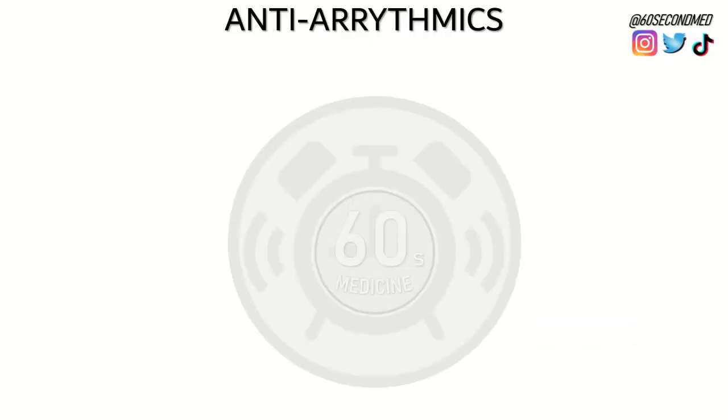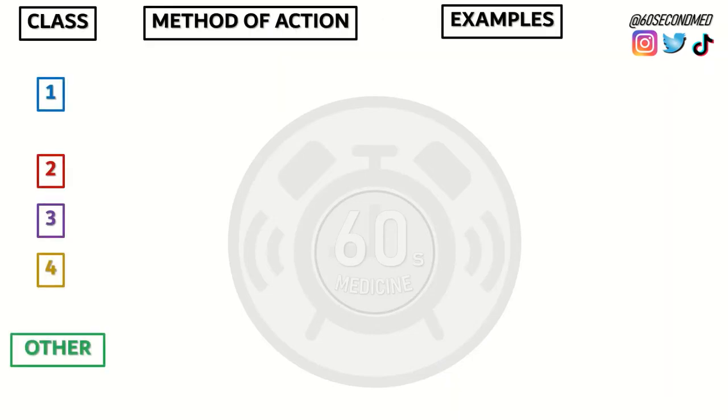Anti-arrhythmics treat abnormal rate or rhythm of the heart. They are traditionally classed by the Vaughan Williams classification system.